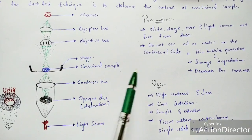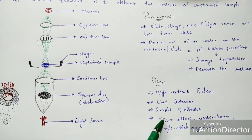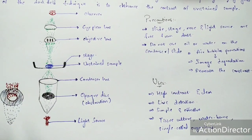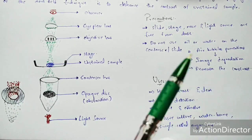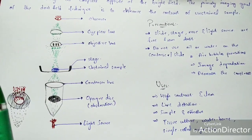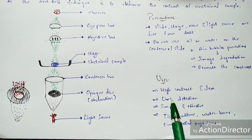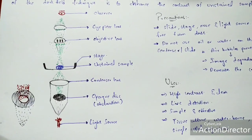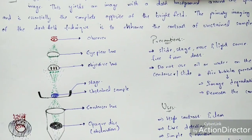Dark field microscopy is simple and effective. Types of microorganisms observed include tissue cultures — smears extracted from tissue culture are placed on the stage as unstained samples, and the observer finds a clear image. Waterborne microorganisms extracted from contaminated water can also be placed on the stage and observed. Single-cell microorganisms are likewise used. These are examples of microorganisms mainly studied using dark field microscopy.